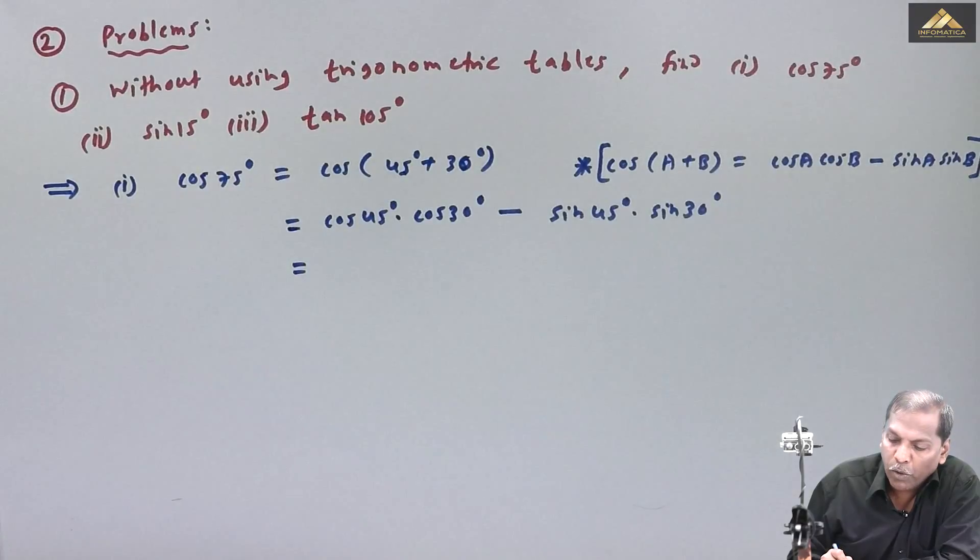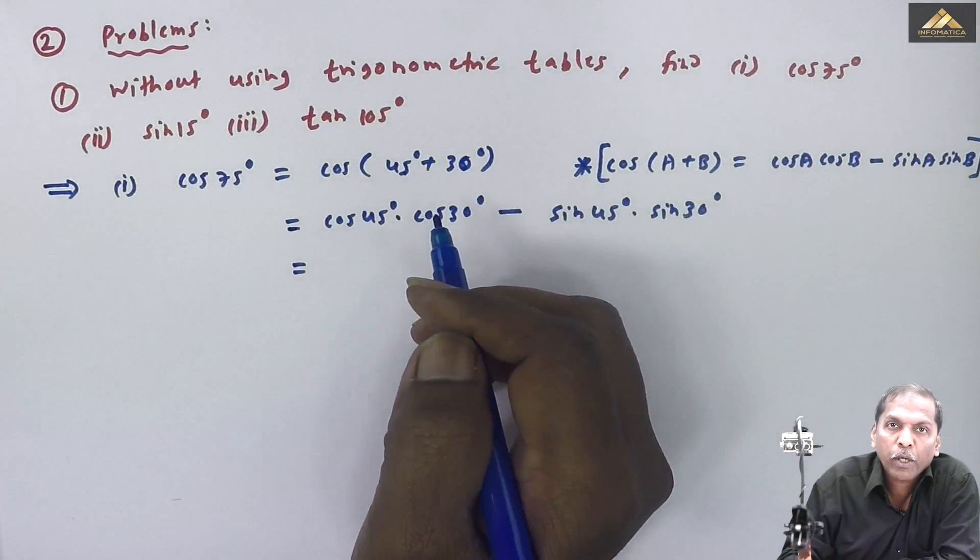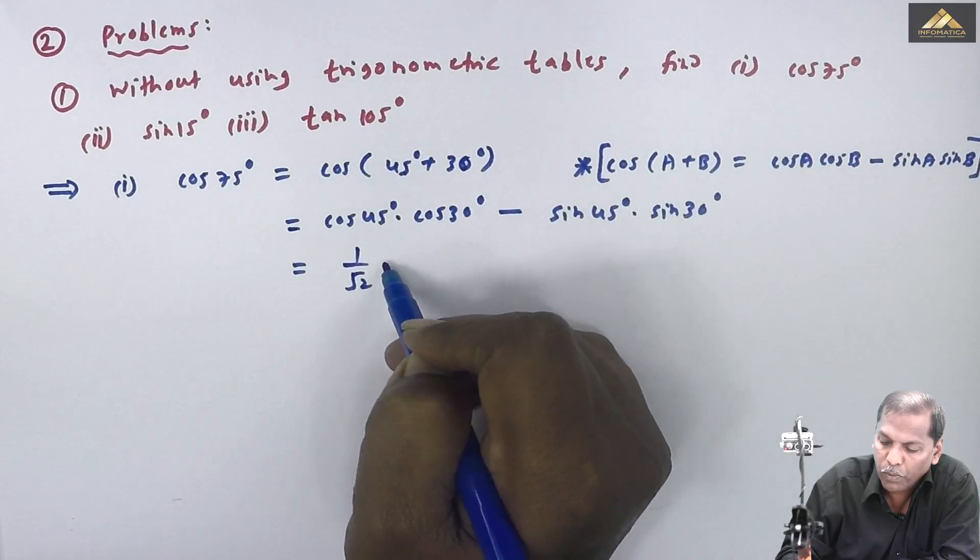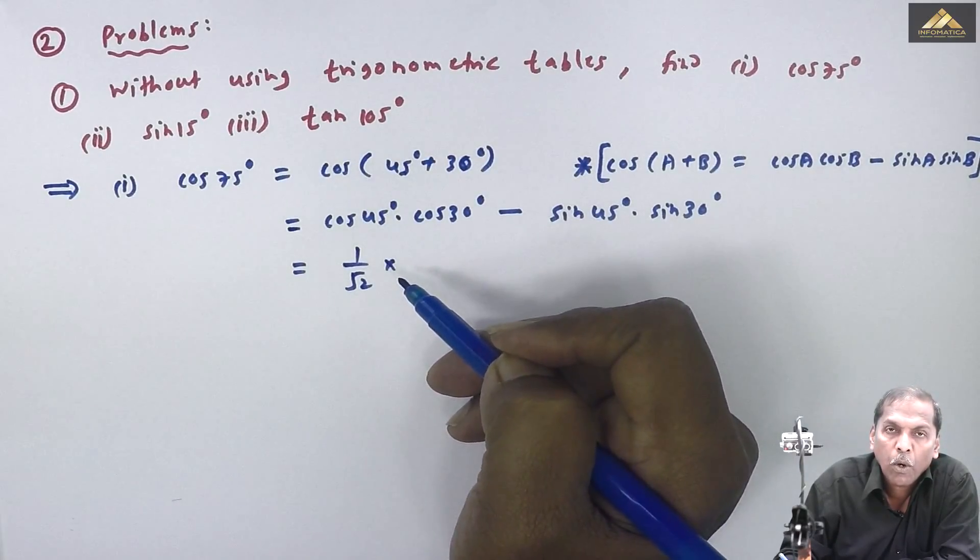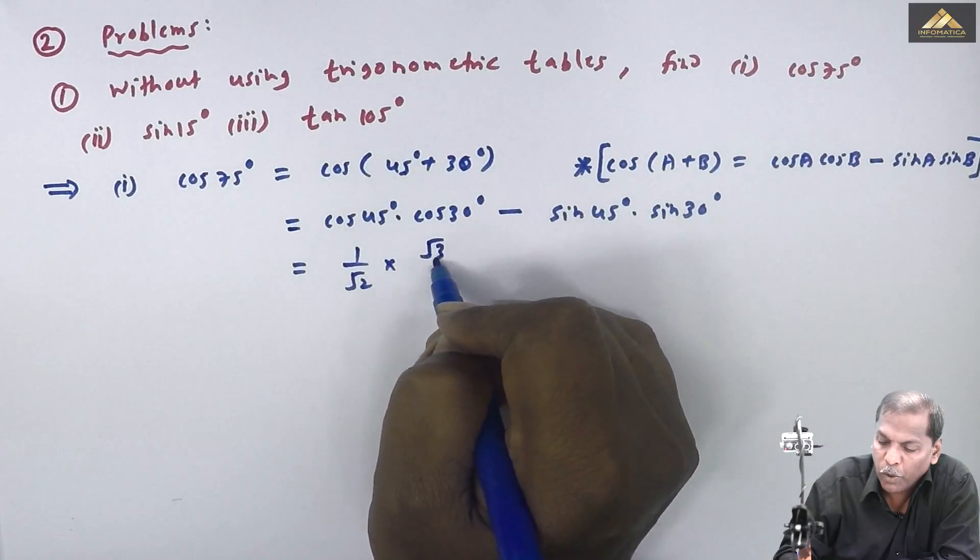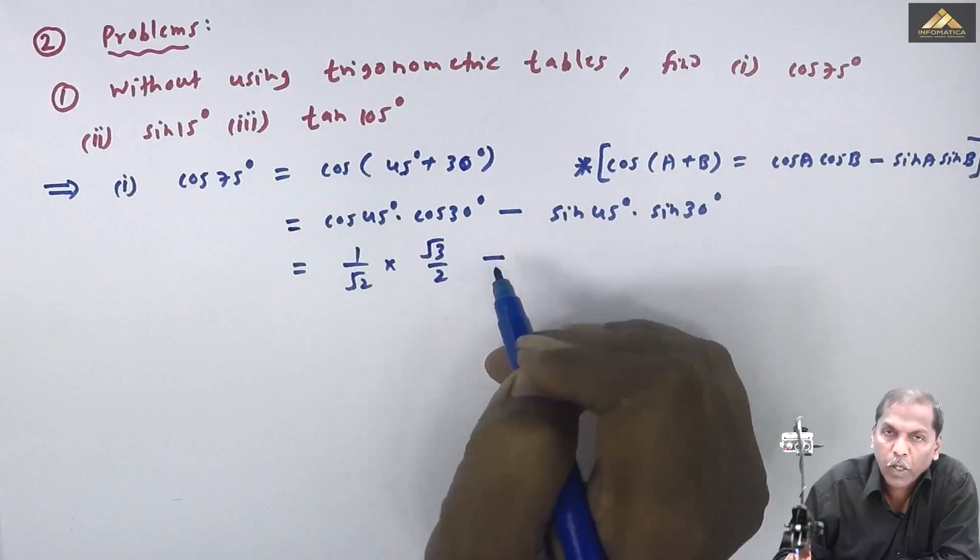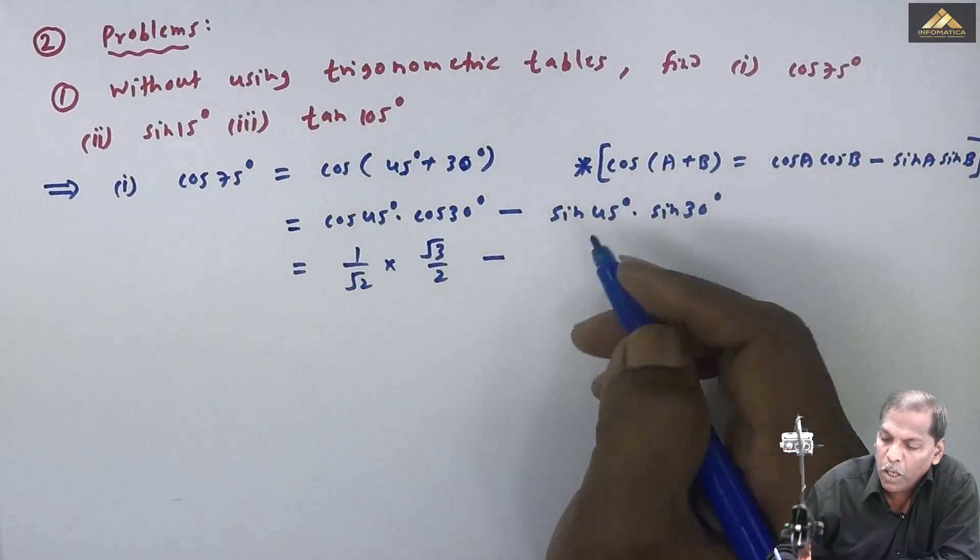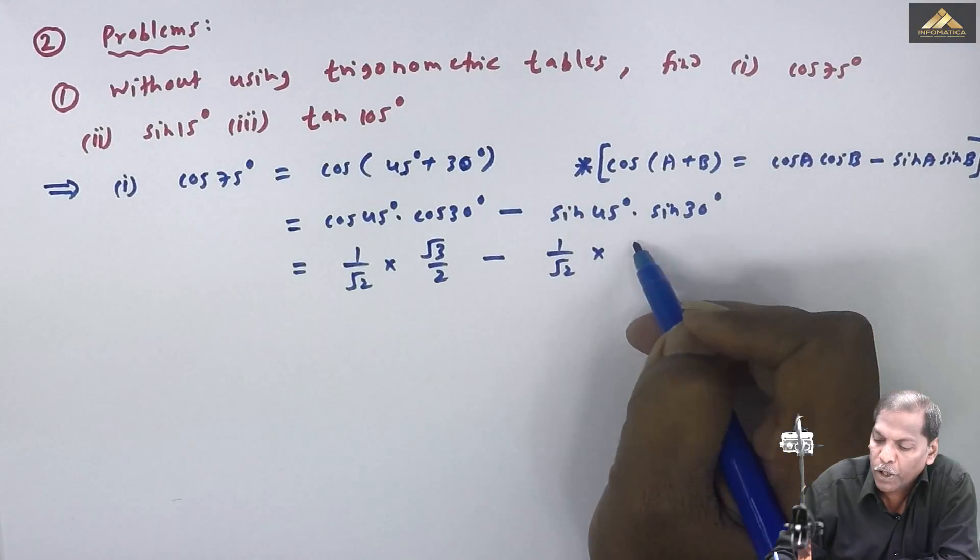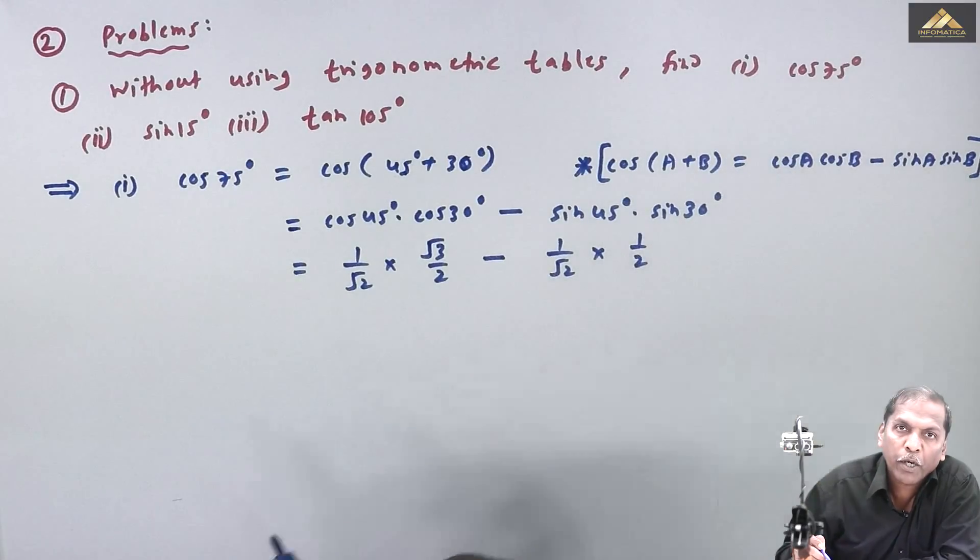So it is equal to, from the trigonometric table, cos 45 degree value is 1 upon root 2 into cos 30 degree which is root 3 upon 2, then minus sin 45 value is 1 upon root 2, and sin 30 value is 1 by 2.